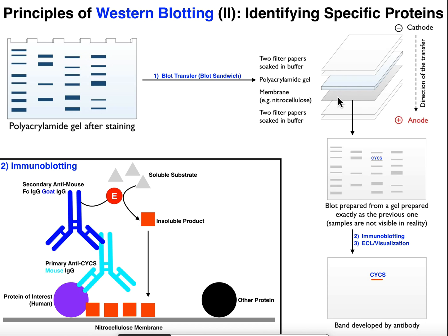Once you do the blot transfer, you take out the nitrocellulose membrane — this is what we call the blot. The proteins are on it but the membrane is essentially translucent; you would not actually be able to see the samples when you pull it out of the blot transfer. This diagram is just showing you where the proteins are located. This protein right here — that's our cytochrome C — is the one we want.